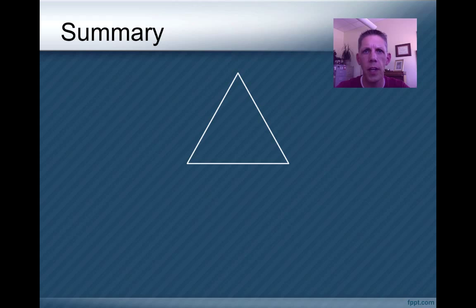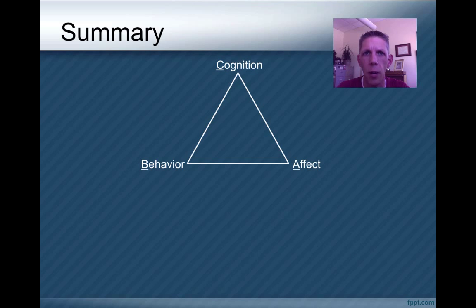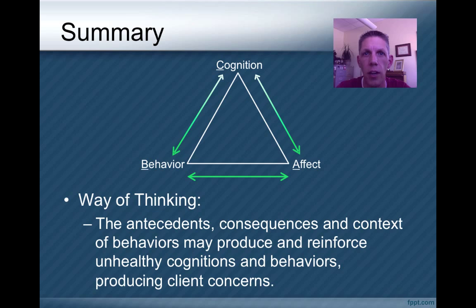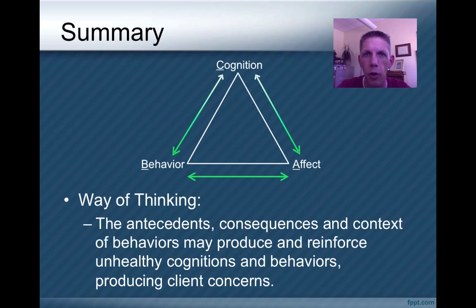Let's wrap this up. It's helpful to think about three dimensions in clients' lives: all clients have feelings, they have behavior, and they have thoughts. Meaningful client change is probably going to impact all three — if a client doesn't change all three, it's probably not a lasting or meaningful change. Different models emphasize different components. In this model, behavior has a huge impact on emotion, but cognition also impacts both behavior and emotion — in reality, they all influence one another. The main idea is that what comes before behavior, what comes after, and the context all influence how we think and behave, and that's what causes the concerns that bring clients into counseling.